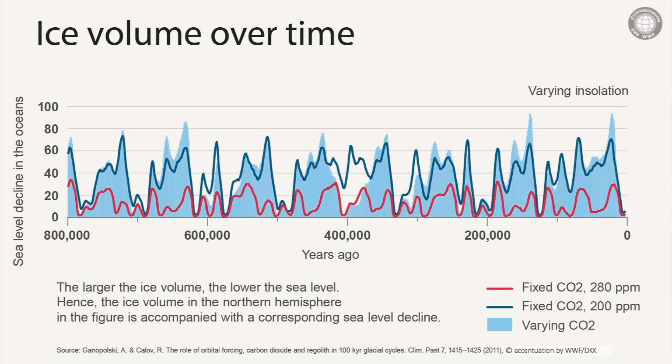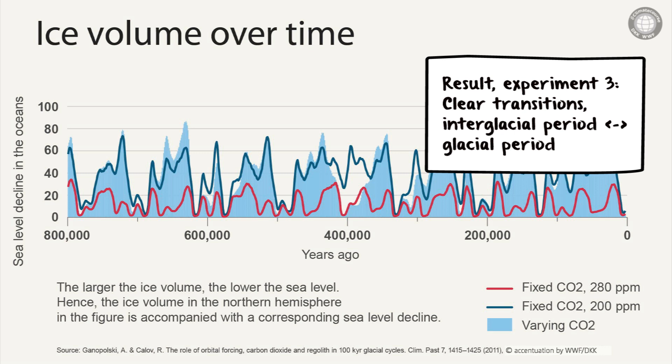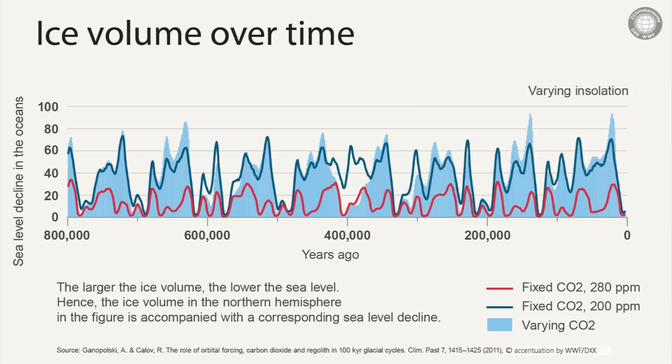In a third experiment, both the radiation fluctuations resulting from variations in the Earth's orbital elements and fluctuations in CO2 concentration are now specified in the model. And if both factors are allowed to vary over time, as we see by the blue shading, the ice volume in the northern hemisphere now responds significantly differently to the forcings. In particular, the amplitudes are much more pronounced and there are clear transitions from interglacial to glacial periods and vice versa. We also see that these two transitions occur at different rates — the transition from glacial to interglacial periods is faster than that from interglacial to glacial periods.